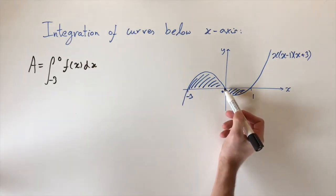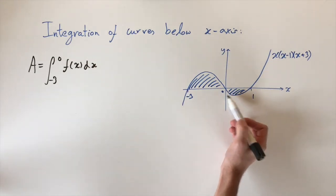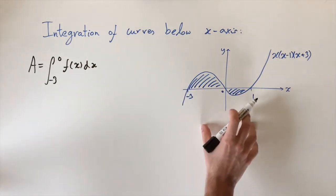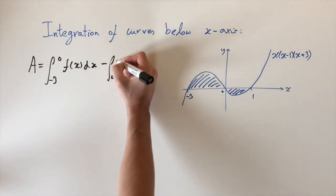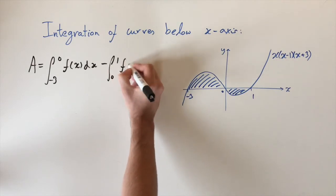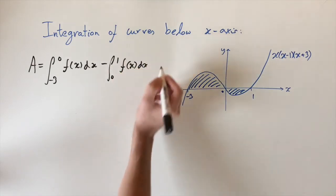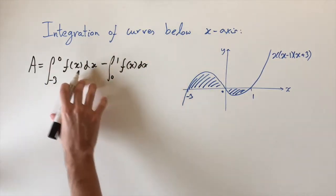And then we said that since this is below the x-axis, it's going to be negative, the area. So to get the total area, we just put a minus sign here and we integrate between 0 and 1 of this function f of x dx. And now if we evaluate this integral, it's going to give us the exact area.